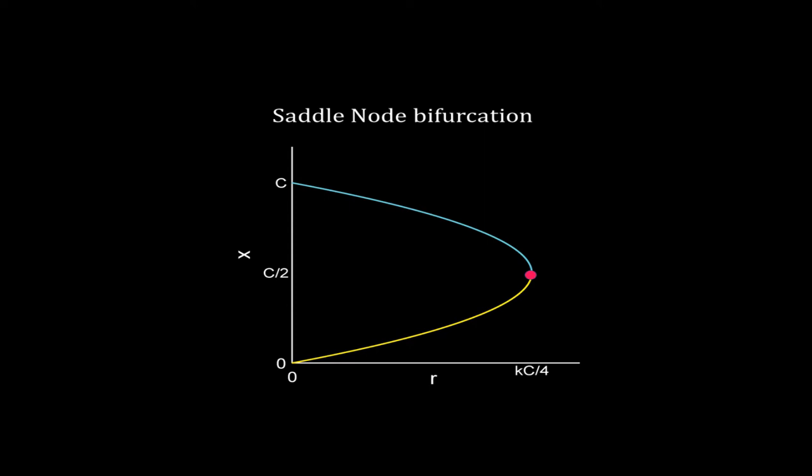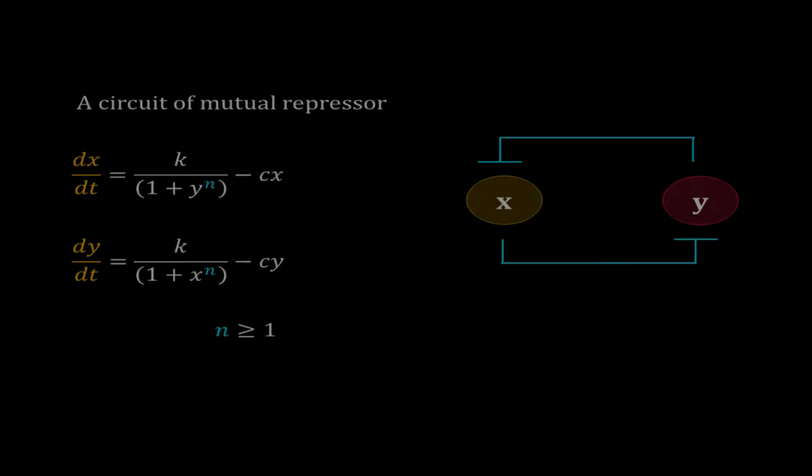This type of bifurcation is called the saddle node bifurcation. In saddle node bifurcation, in a particular range of the control parameter, the system has one stable and one unstable steady state. At the bifurcation point these two steady states, or nodes, collide and disappear. We will often encounter saddle node bifurcation in biological systems.